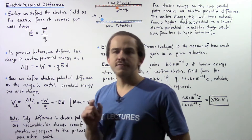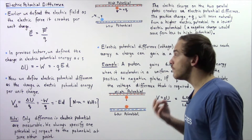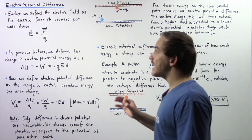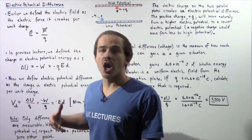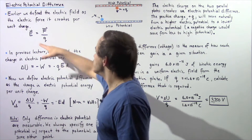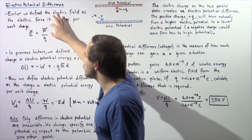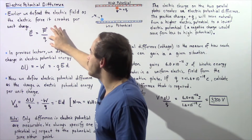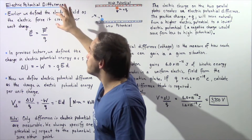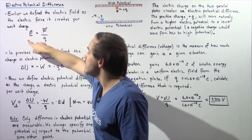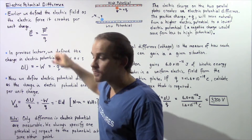We defined the electric field as the electric force that it creates per some unit charge on which it acts. So the electric field is defined as the force divided by our charge, where the force is the force as a result of this field that acts on some given charge.